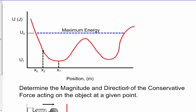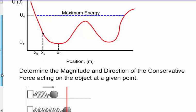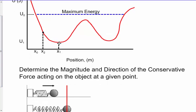Now I want to determine the magnitude and the direction of the conservative force acting on the object. This goes back to what we talked about earlier regarding derivatives. At this point, this is like my equilibrium point. If the object is pulled back here and it has potential energy, as I move it toward equilibrium, the potential energy decreases. The force will always point back toward the equilibrium point.